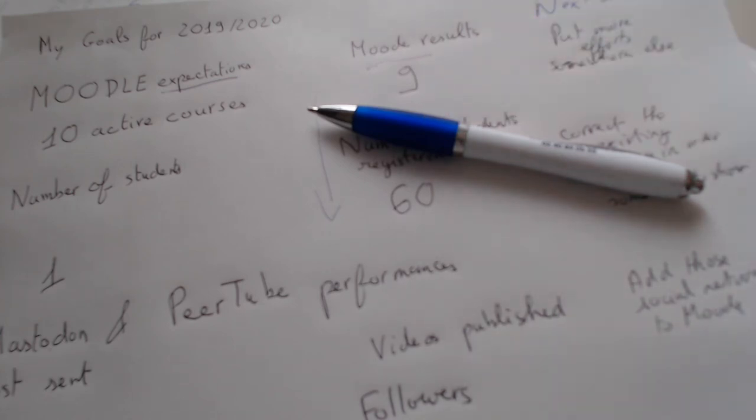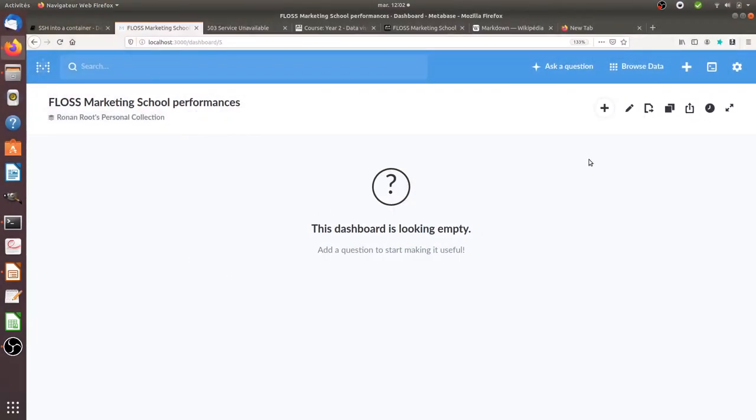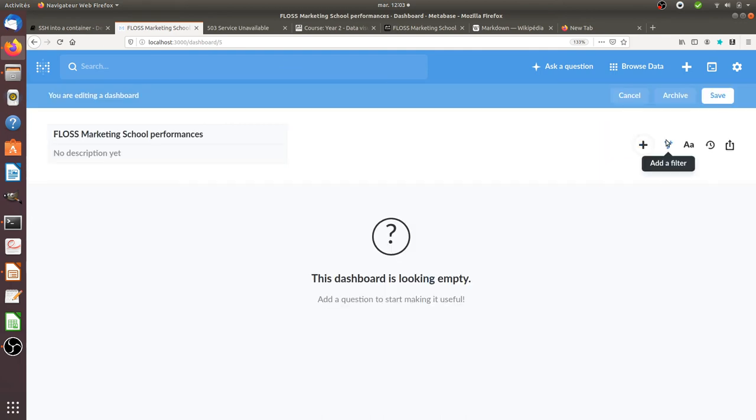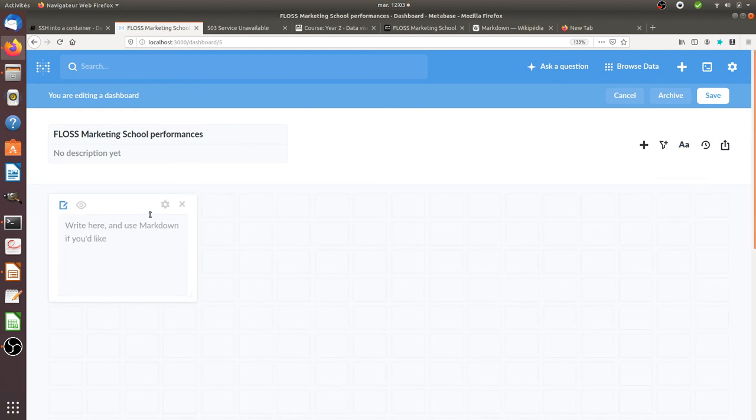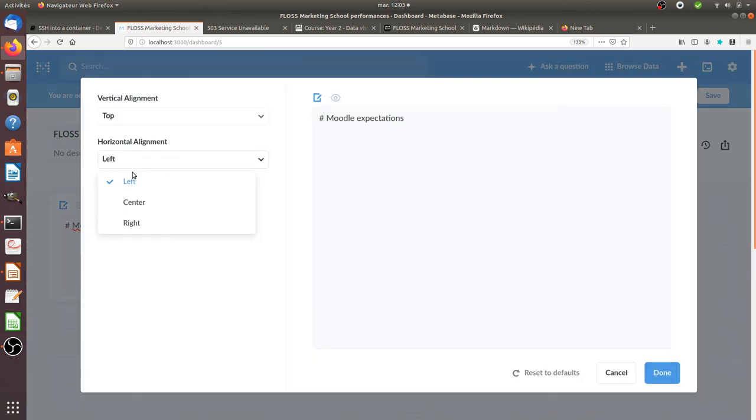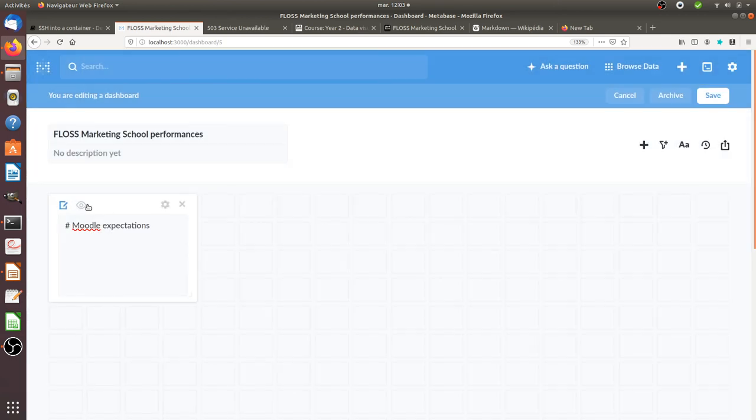Once you have all this part finished, what you can do is that you can move back on your data visualization software platform such as Metabase and start to design your dashboard. Typically here it will be about editing the dashboard and just picking out the different elements that you want. For example, here in my case it will be like my Moodle expectations. I can change that a little bit in order to make it centered and visualize Moodle expectations. Then I can start for my first column, then I will draw my second column, then my third column, and then I will make the integration.